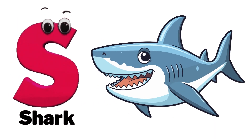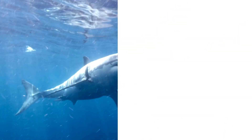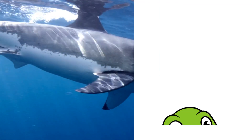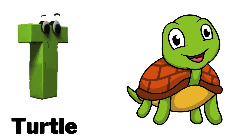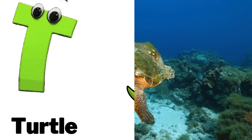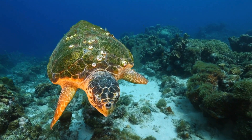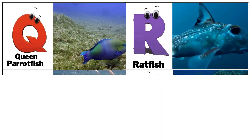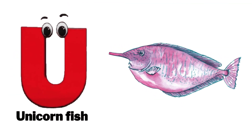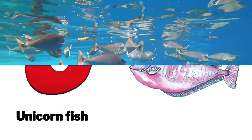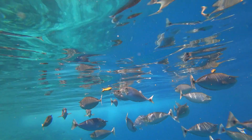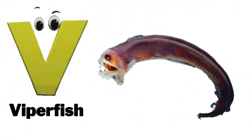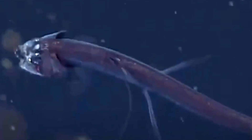S is for starfish. T is for turtle. U is for unicorn fish. V is for blackfish.